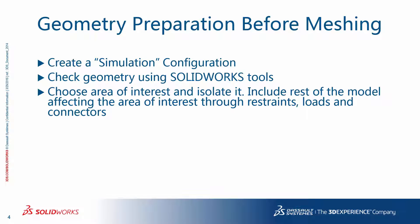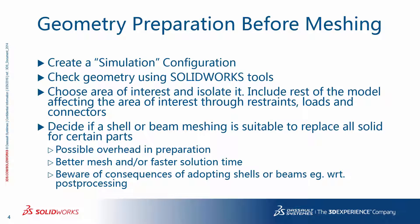Choose the area of interest and isolate it. Include the rest of the model affecting the area of interest through restraints, loads, and connectors. Decide if a shell or beam meshing is suitable to replace all solids for certain parts. Although that may lead to a possible overhead in geometry preparation, it may lead to a better mesh and/or faster solution time, and ultimately to your advantage and time saving elsewhere.